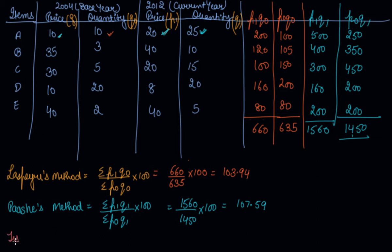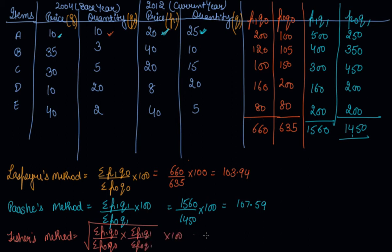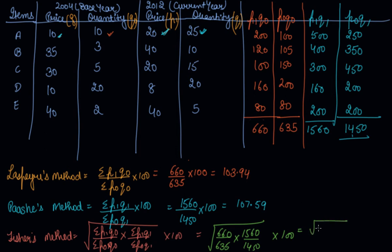The last method is Fisher's method, which is the most ideal method. Fisher's method combines both formulas: it is the square root of the Laspeyres index multiplied by the Paasche index. Putting in the values: under root of (660/635) into (1560/1450) into 100, which equals under root of 1.03 into 1.07, giving 1.05 into 100, so the Fisher's index is 105.